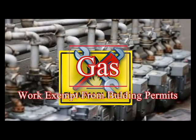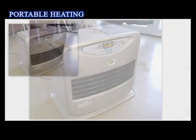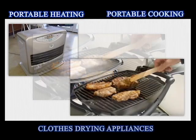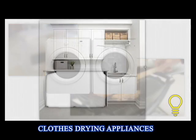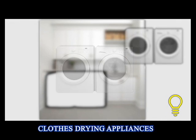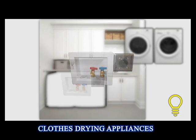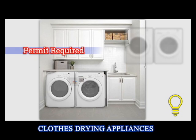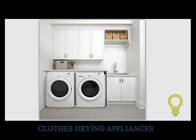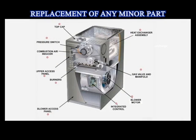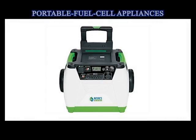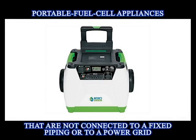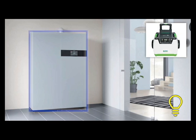Gas-related work exempt from a building permit includes portable heating, cooking, and clothes-drying appliances. However, if the installation of the clothes-drying appliance requires installation of gas piping, electrical, water, or sewer, a permit will be required. Replacing minor parts of equipment are exempt, provided the equipment is not made unsafe. Portable fuel cell appliances that are not connected to piping or the grid are exempt. A fuel cell connected to piping or the grid would require a permit.